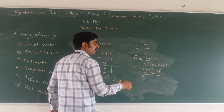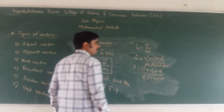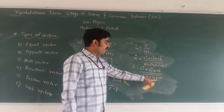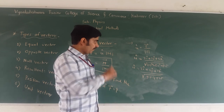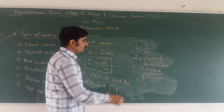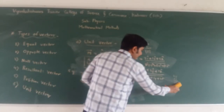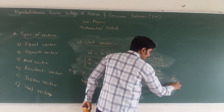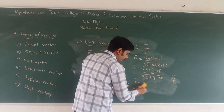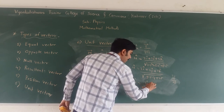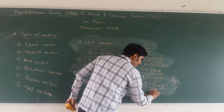What is the square of 3? It is 9. Square of 2 is 4. Square of 5 is 25. Adding them: 9 plus 4 is 13, and 13 plus 25 gives us 38. So the magnitude is root 38. Therefore u-cap is equal to 3 i-cap plus 2 j-cap plus 5 k-cap upon root 38. This is the unit vector of the given vector P.